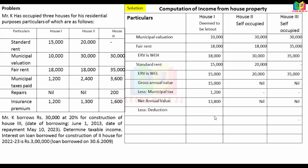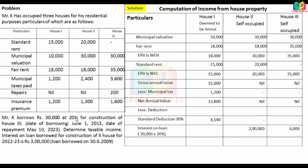Now for deductions: the standard deduction is 30% of the Net Annual Value. The net annual value is Rs. 13,800. Standard deduction = 30% × 13,800 = Rs. 4,140. Then interest on loan is added as a further deduction. House 1 NAV is Rs. 13,800, less standard deduction Rs. 4,140, giving Rs. 9,660.